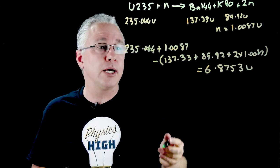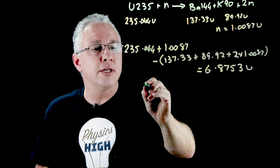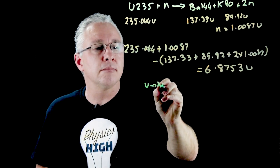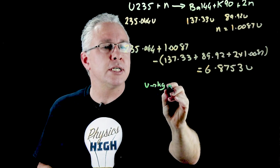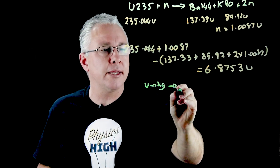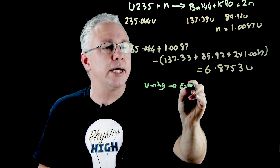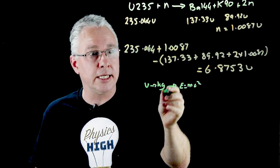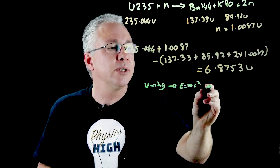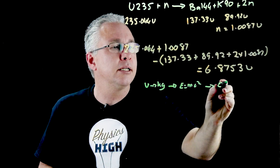What is the long way? Well, you could convert first the u to kilograms, and then I can apply E equals mc squared, because the mass is in kilograms—the SI unit—that will give me the energy in joules.